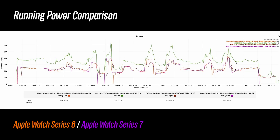One thing to note about running power on Apple Watch, at least for now, is that it's truly just running power — it's not calculated during walking. Here at the end of this run as I started walking, both the Series 6 and Series 7 I was using showed no power, whereas the other sensors were still reporting something. There's obviously work involved in walking, so hopefully Apple adds that in the future. I tried everything from a slow walk on the beach to a brisk walk to a full race walk, and no power was reported — the Apple Watch truly knows whether you're running or not.